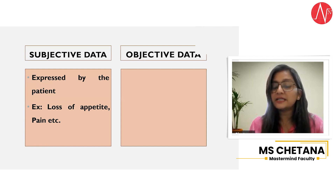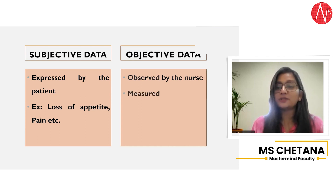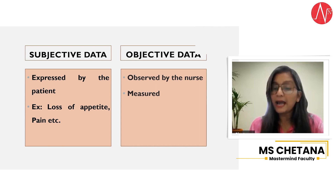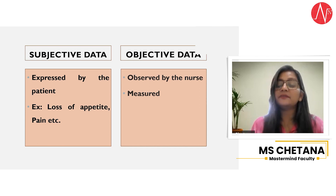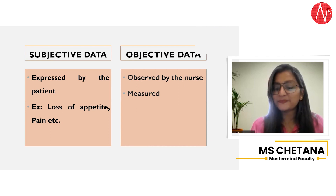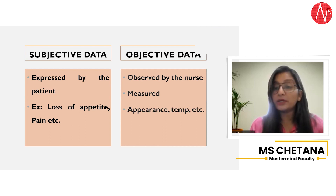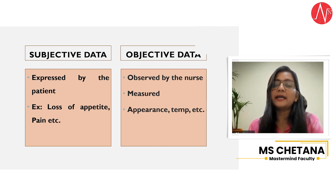On the other hand, objective data is something where you use your observation to collect that information. For example, you observe that the patient is looking uncomfortable and appears to be having some kind of pain. Objective data can also be measured. The examples of objective data include the overall appearance of the patient — you use your observation to collect this information — as well as body temperature. All of these things can be measured and can only be collected by observation.